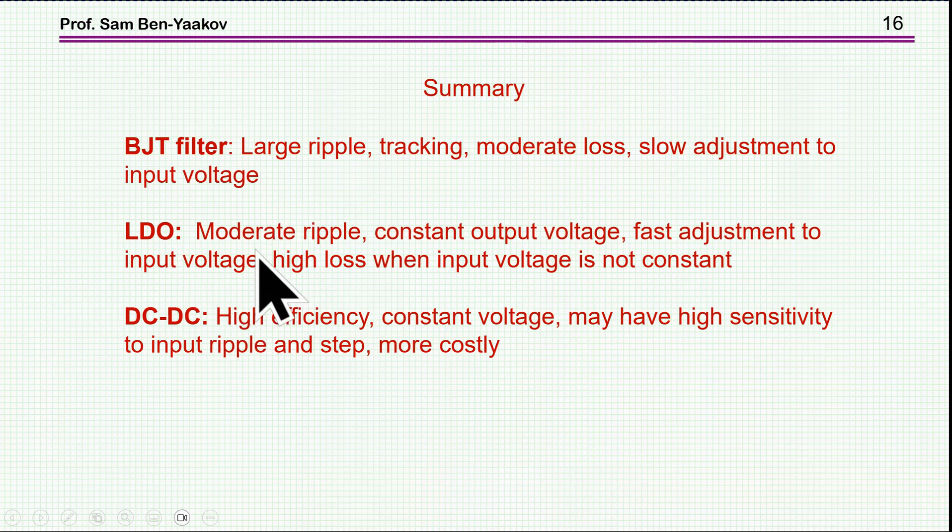Now, LDO can tolerate moderate ripple. It has a constant output voltage. It has fast adjustment to input voltage. But it has high loss when the input voltage is not constant. That is, when the input voltage is increased. Now, the DC-DC converter, it certainly has very high efficiency, has a constant output voltage. But it may have high sensitivity to input ripple at certain frequency ranges, and to a step in the input voltage. And, of course, it is more costly.